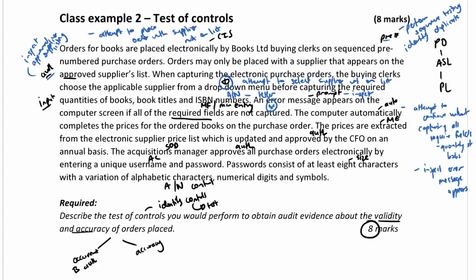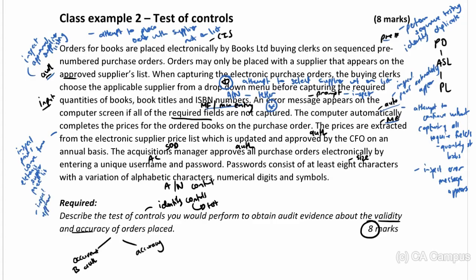The mandatory field and minimum entry controls have now been addressed. The next control is that the computer automatically completes the prices for ordered books on the purchase order — we can inspect that this auto-completion occurs. We can also inspect that the prices are extracted from the electronic supplier price list, and then inspect that the price list is approved by the CFO.